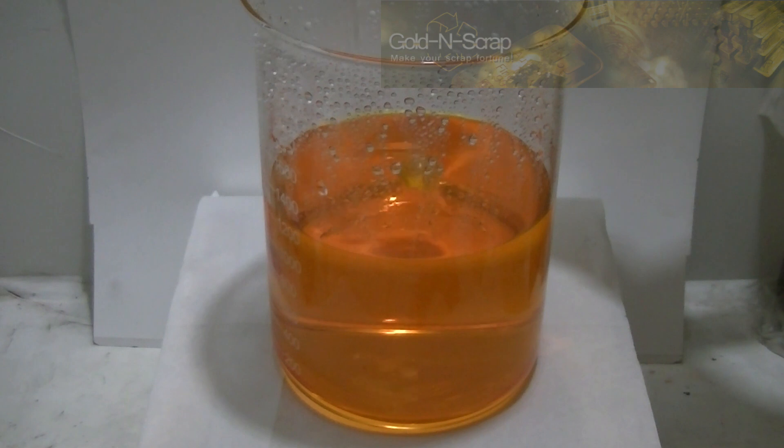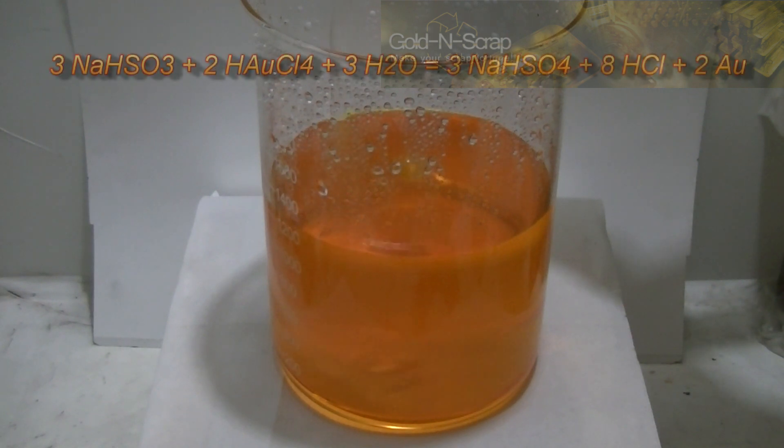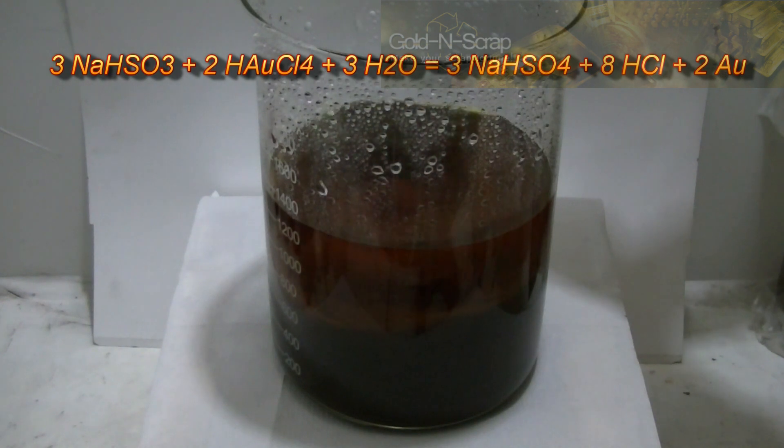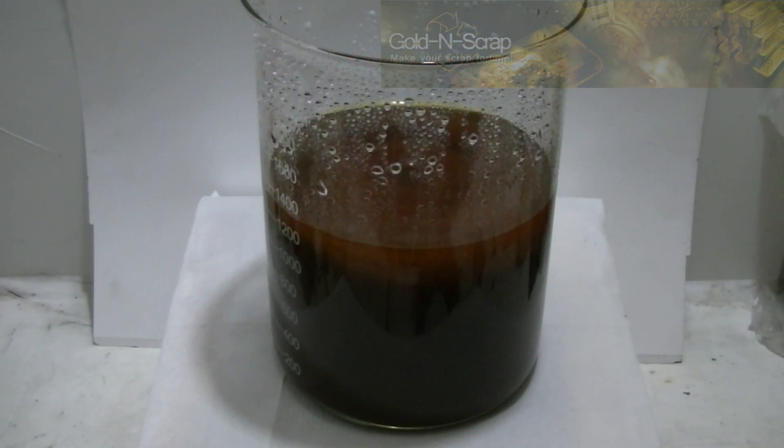The SMB is first dissolved in water and then added to a stirred gold solution. The SMB will react with the gold ions in the solution and reduce it to metallic gold powder. As a result, some sulfur dioxide gas will release. It is pretty toxic so the reaction must be done under a fume hood. By the way, you don't really have to use a magnetic stirrer like in this video. It is just my personal favorite.